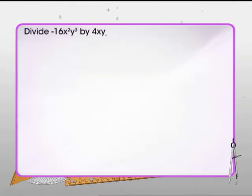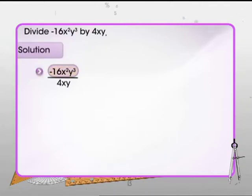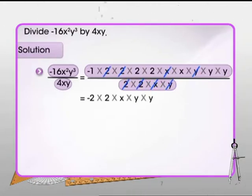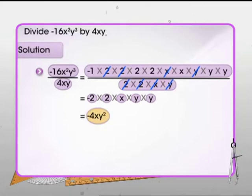Now let's take one more example, this time involving two variables. Let's divide minus 16x squared y cubed by 4xy. First write the numerator and denominator as the product of irreducible factors. So minus 16x squared y cubed is minus 1 into 2 multiplied by itself 4 times into x multiplied by itself twice into y multiplied by itself three times. And 4xy is equal to 2 into 2 into x into y. Now canceling the common factors we get minus 2 into 2 into 2 into x into y into y, which is minus 4xy squared.